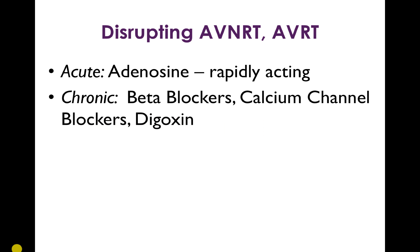Antiarrhythmic drugs can be used to disrupt AVNRT and AVRT by interrupting conduction through the AV node, which is highly susceptible to several drug classes. Acutely, to either terminate or diagnose the rhythm, adenosine is used because it's very rapidly acting — you give the drug, it lasts about six to eight seconds, and you get transient elective heart block. Chronically, to manage the condition and slow AV node conduction, you can use beta blockers, calcium channel blockers, or digoxin.